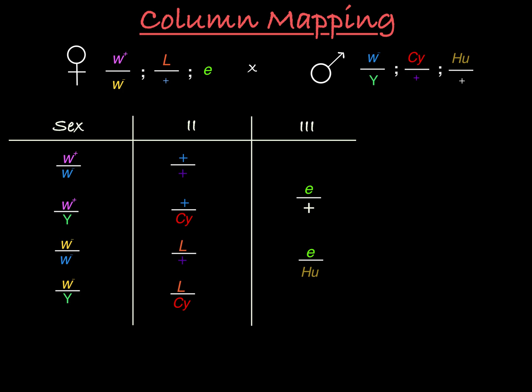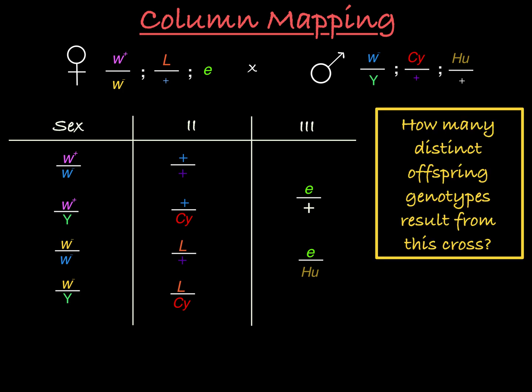What can we learn from this map? If you want to determine the overall number of distinct potential offspring genotypes, all you need to do is count the number of distinct genotypes in each column and then multiply those together. In this case, we have four distinct genotypes in the sex chromosome column, four in the second chromosome column, and two in the third chromosome column. Four times four times two is 32, so we have 32 distinct offspring genotype options coming out of this cross.